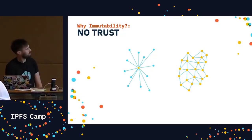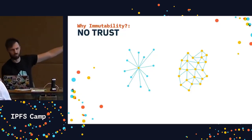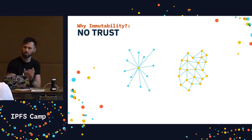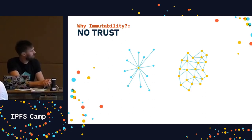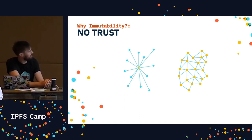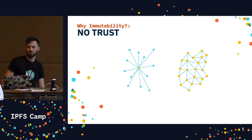In a peer-to-peer network, there's no central point of authority, no one to implicitly trust. But in the web of today, we implicitly trust things like institutions, certificate authorities, social media, government. But that trust is easily subverted, and we can't necessarily rely on the data we receive to be the data we asked for, even though we often do.